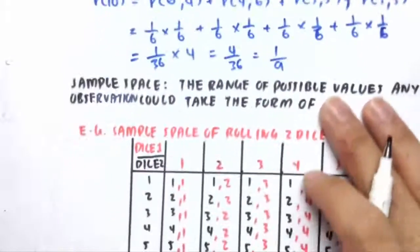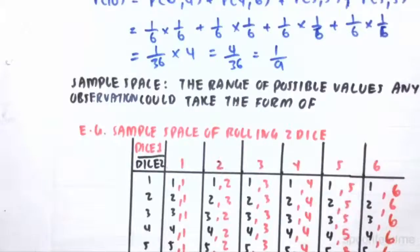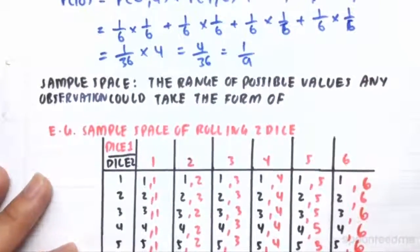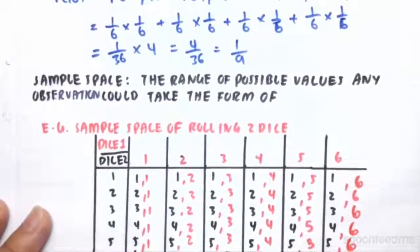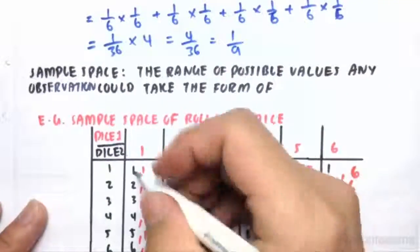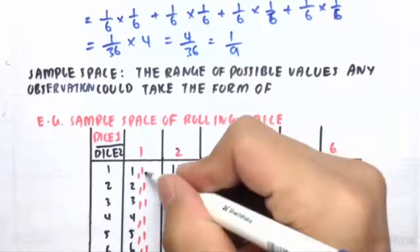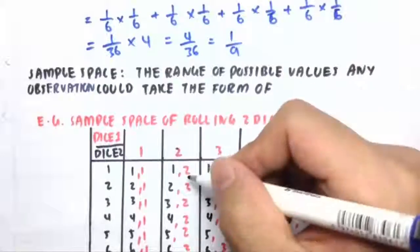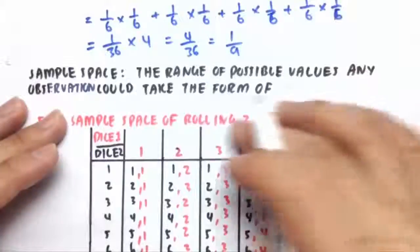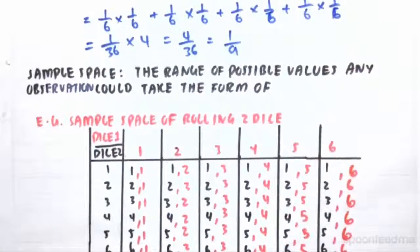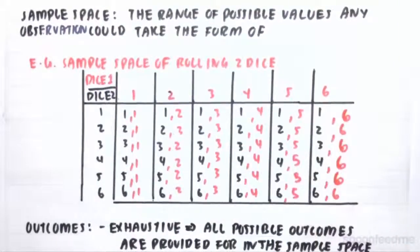Then we move on to what we call a sample space. A sample space is the range of all possible values any observation can take. For example, rolling a dice twice: you could get a one then a one, or a one then a two, and so on. Once you fill it all up, you have 36 different possible combinations that can make up an event.